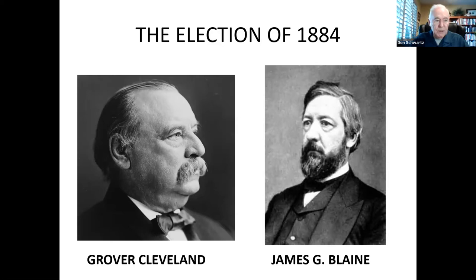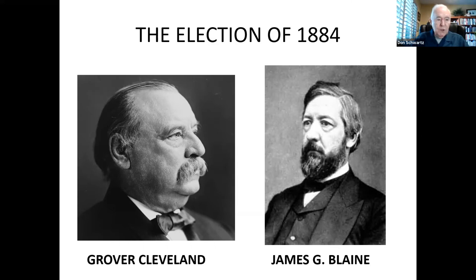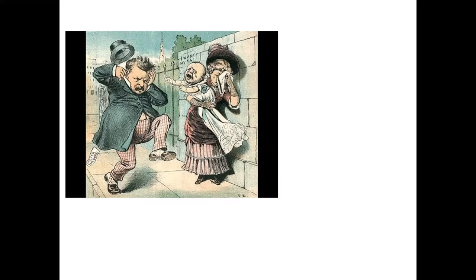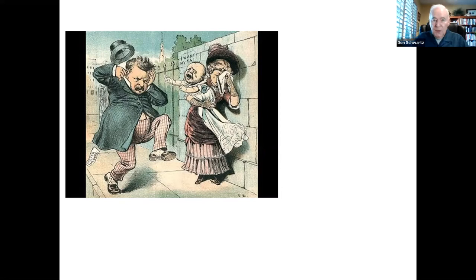In the 1884 election, the Democrats raised the mantra: 'James G. Blaine, the continental liar from the state of Maine.' During the campaign it was revealed that Cleveland, who was a bachelor, had an affair with a widow by the name of Maria Halpin. She had given birth out of wedlock to a son. This cartoon shows candidate Grover Cleveland having to deal with this paternity case during the election.